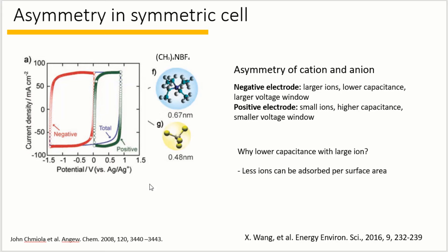The asymmetry can come from the electrolyte. For example, here when tetramethylammonium and tetrafluoroborate is used as electrolyte, the negative electrode absorbs the tetramethylammonium and positive electrode absorbs tetrafluoroborate during the charging process.